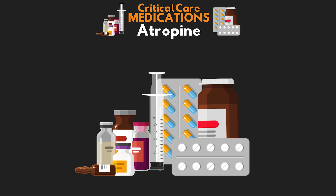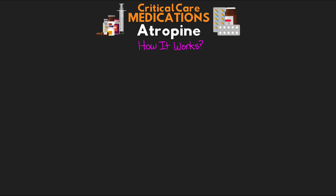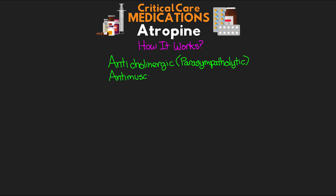Atropine is a very interesting medication, not only in how it works, but in the ways in which it can be used. It is probably most notable for its treatment of bradycardia and its integral role in the ACLS algorithm, but it's actually used for many other purposes as well. Atropine is classified as an anticholinergic, a parasympatholytic, or can also be considered an antimuscarinic medication.